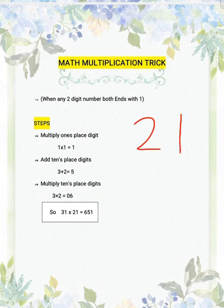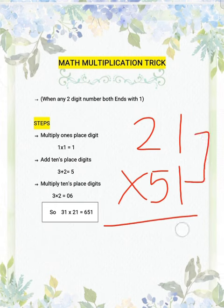Let us see one more sum. Suppose you have 21 times 51. So what will you do? You just multiply this, then add them up, then multiply them.